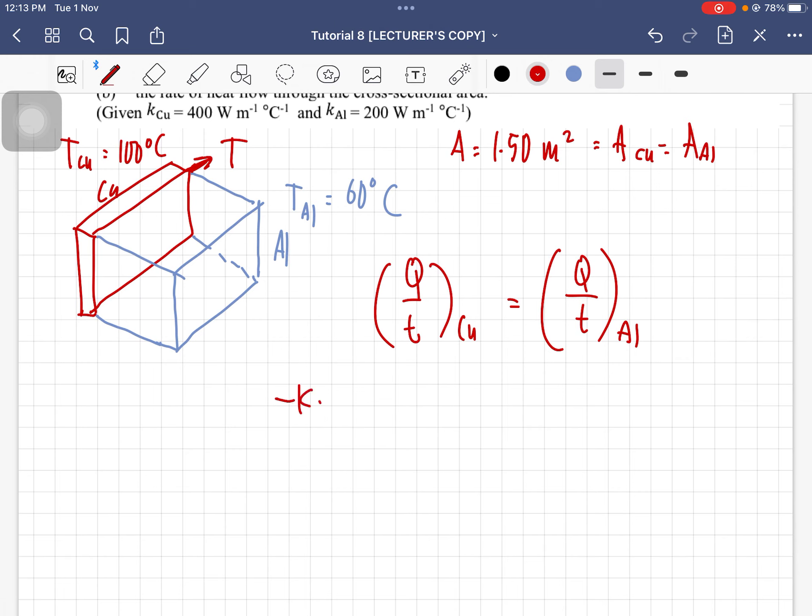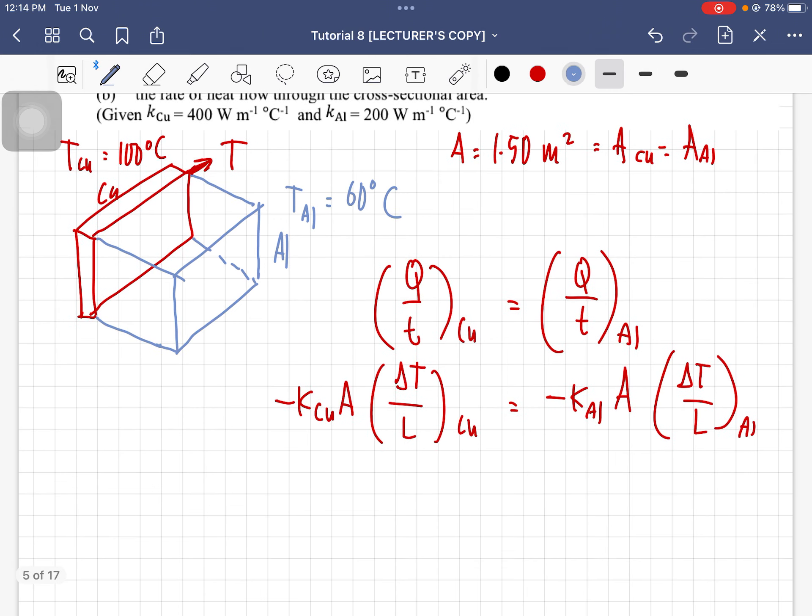The formula is negative K copper A delta T over L, and this is for copper, and then we have negative K aluminum A delta T over L for aluminum. Since the area are the same, we can cancel that, and then now we just have to substitute.